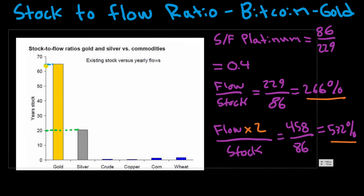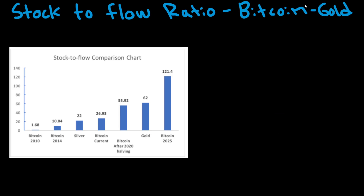Now let's look at another chart and talk about Bitcoin. One very interesting application of the stock-to-flow ratio is for Bitcoin — the original cryptocurrency, or what some people call digital gold. As we can see here, in 2010 Bitcoin had a stock-to-flow of 8.68. Four years later it was much larger, and by 2020 — after the halving — it reached 55.92. By 2025, the stock-to-flow of Bitcoin is projected to be 121, which is roughly double that of gold.